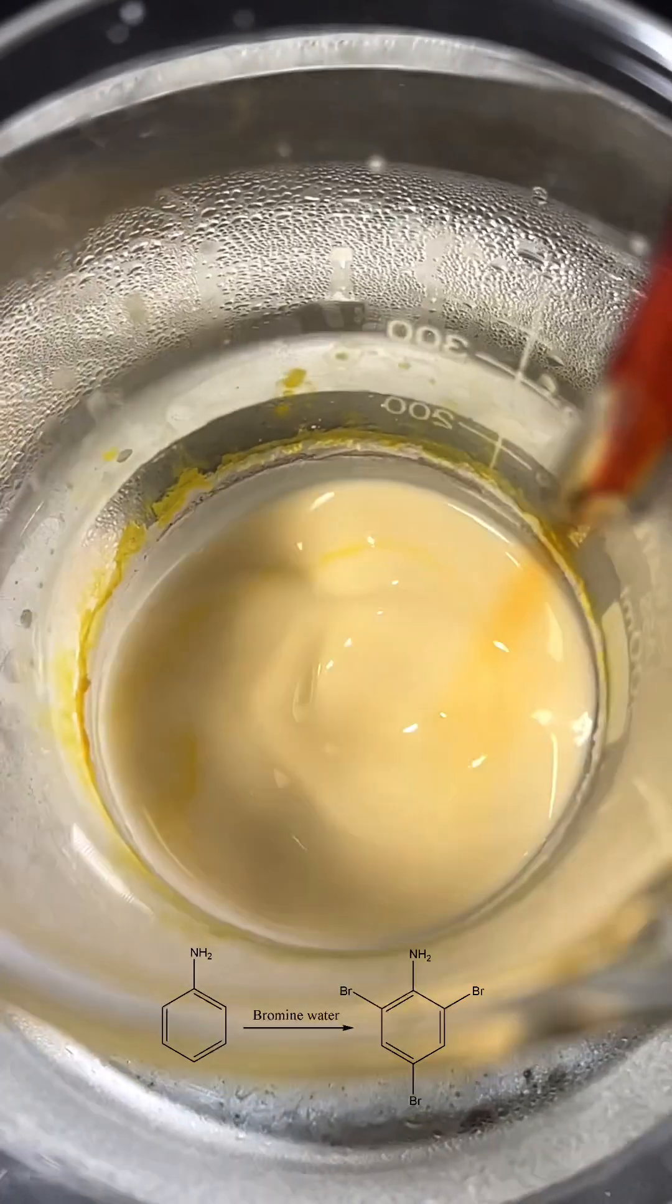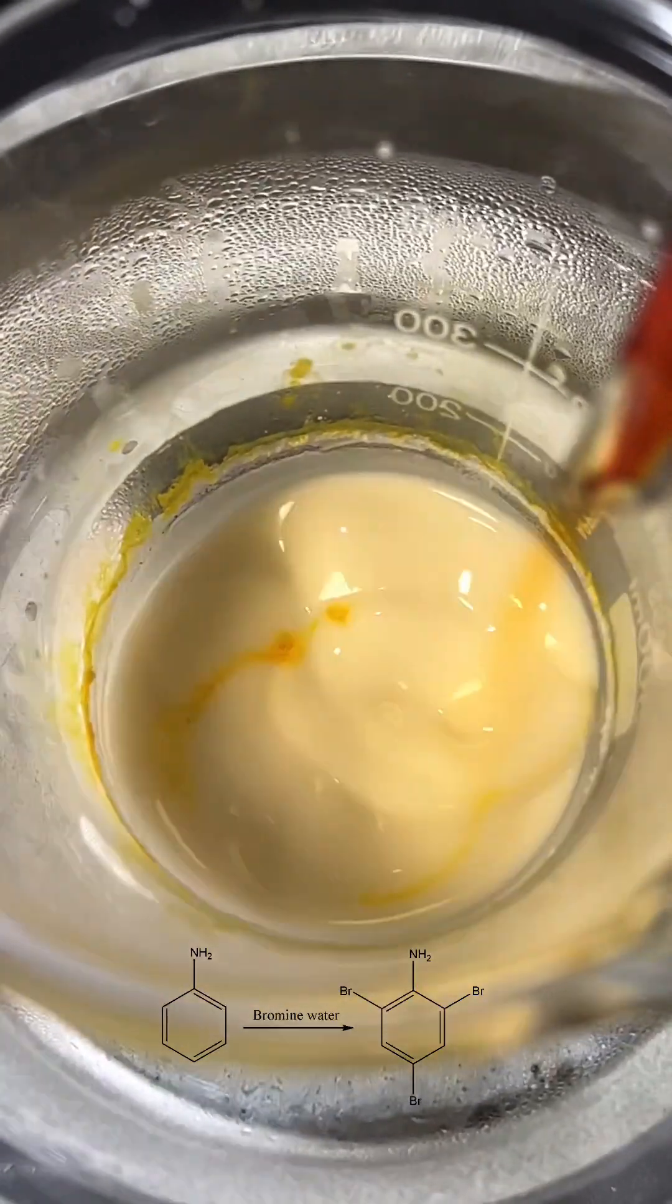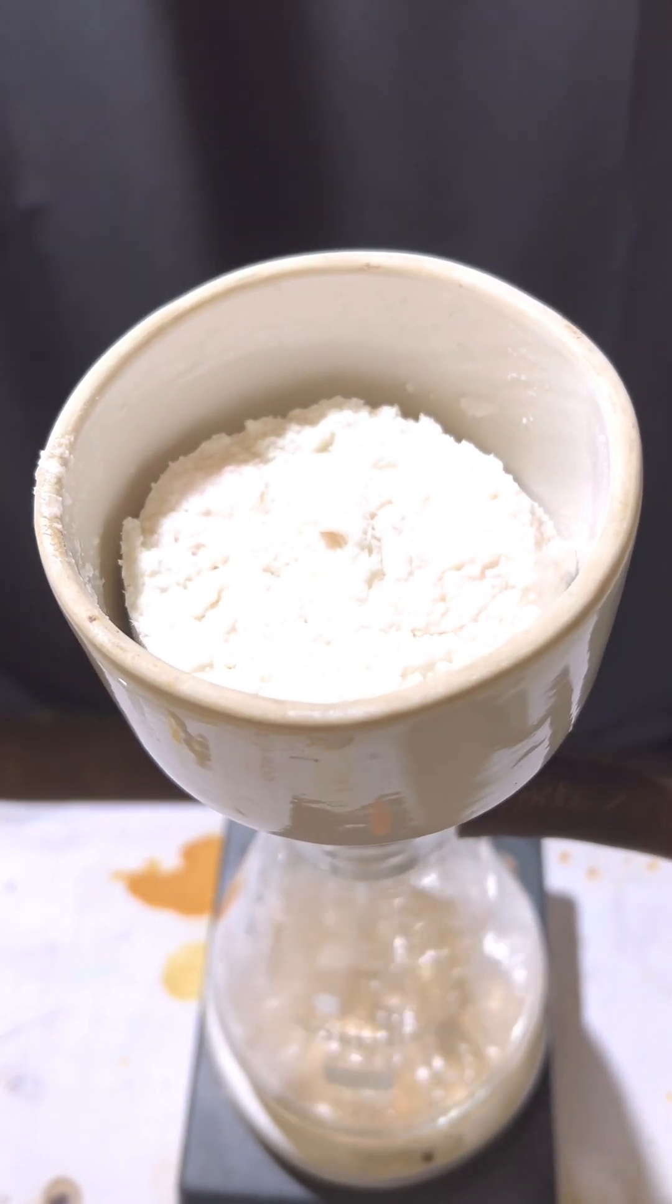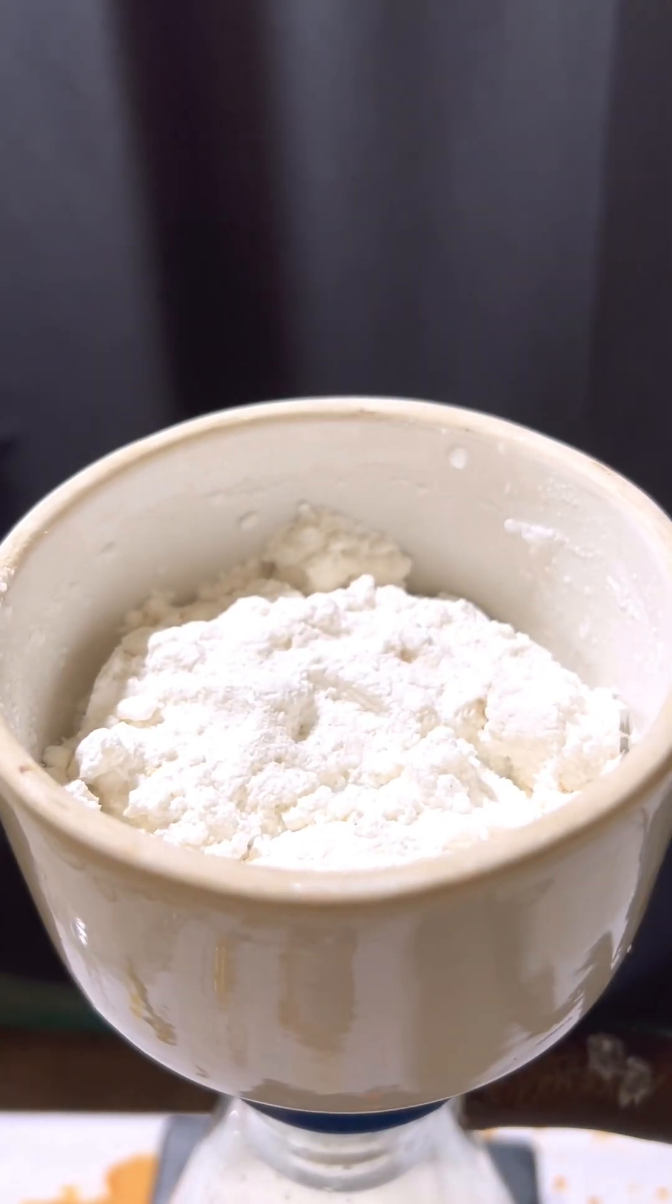You see the formation of a white precipitate. This is the crude tri-bromoaniline. Finally, the crude product was vacuum filtered and dried. It was then recrystallized from 70% ethanol solution.